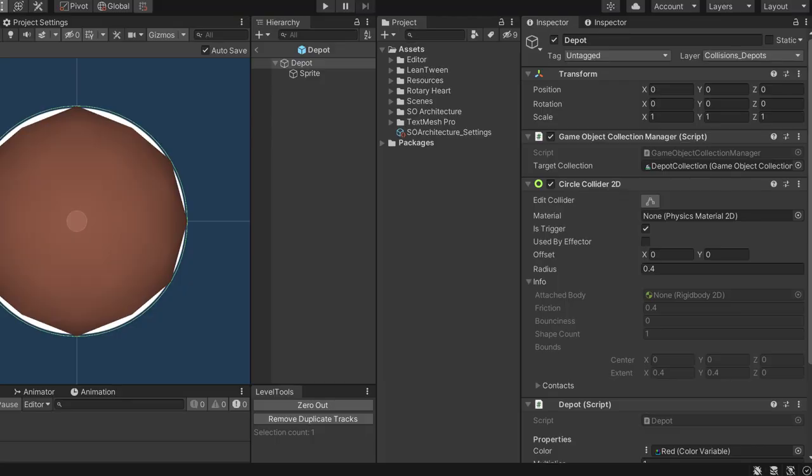So starting simple, let's add colliders to the depots to detect when a train arrives. By the way, I'll make some proper depot sprites, these circles are just placeholders.